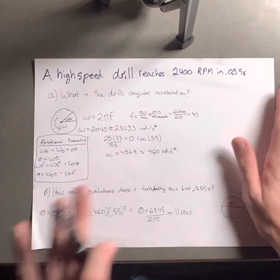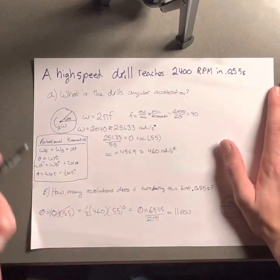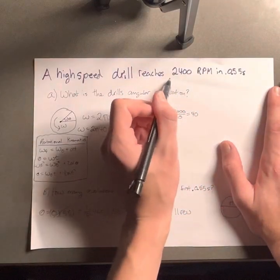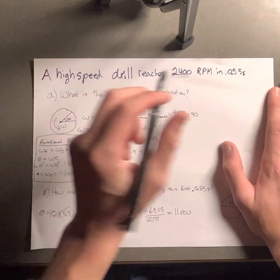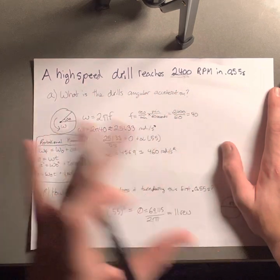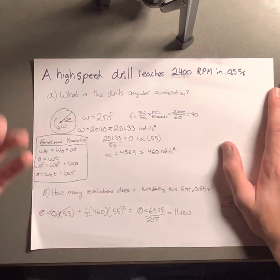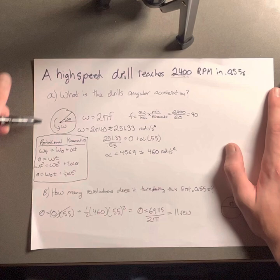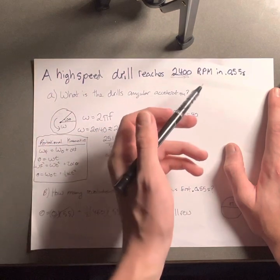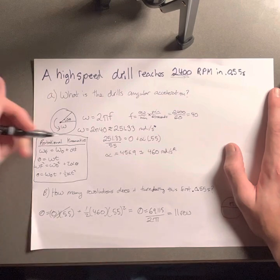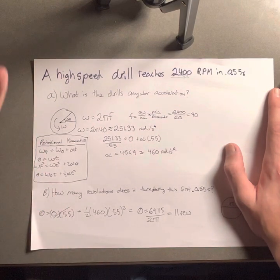So, to find its angular acceleration here, we've been given this 2,400 RPM, which in essence is its angular velocity, its omega. But we measure angular velocity in radians, and this is in revolutions per minute, and we need angular velocities in radians per second.